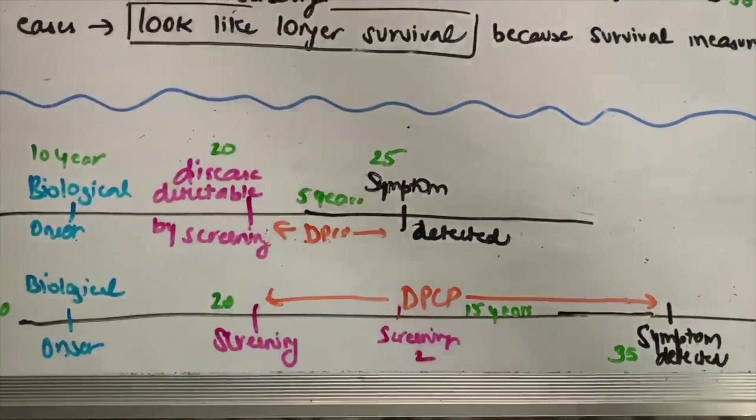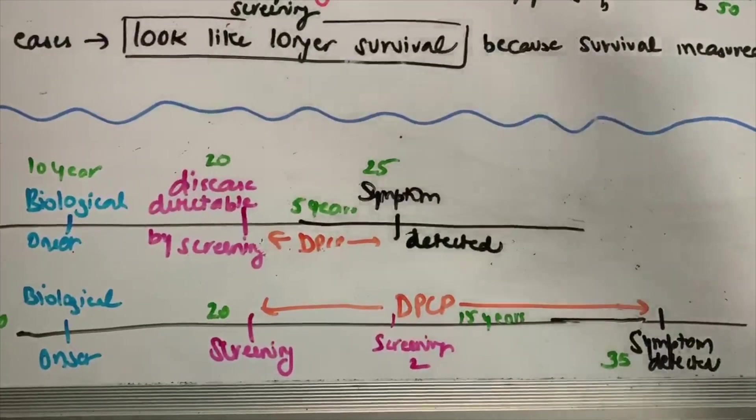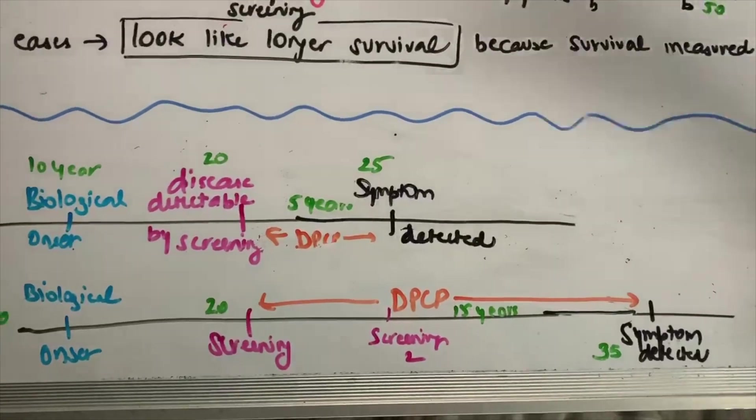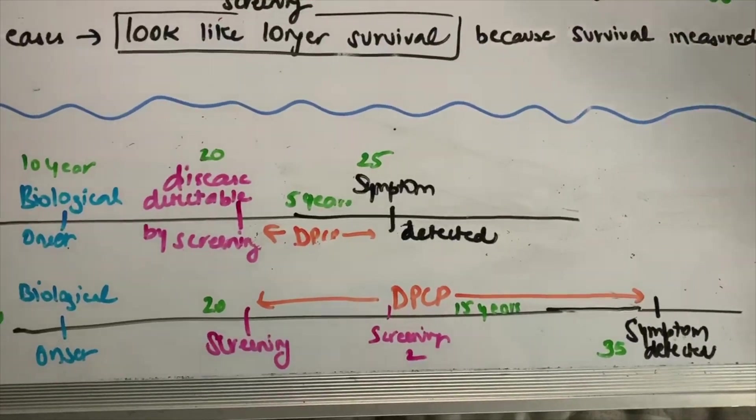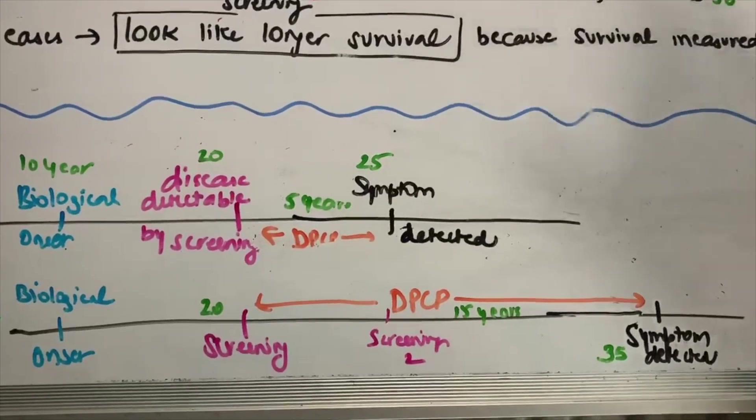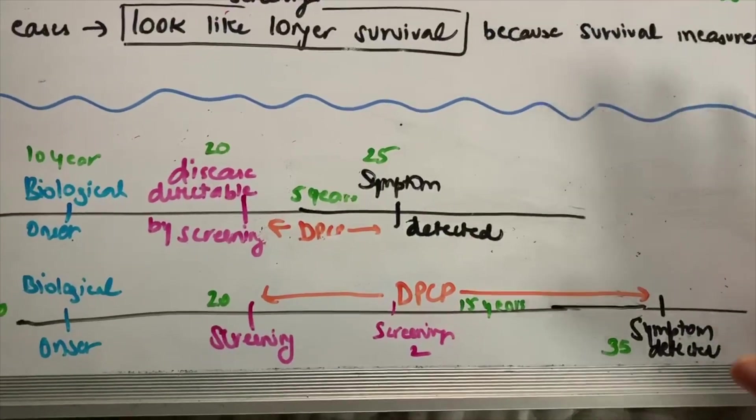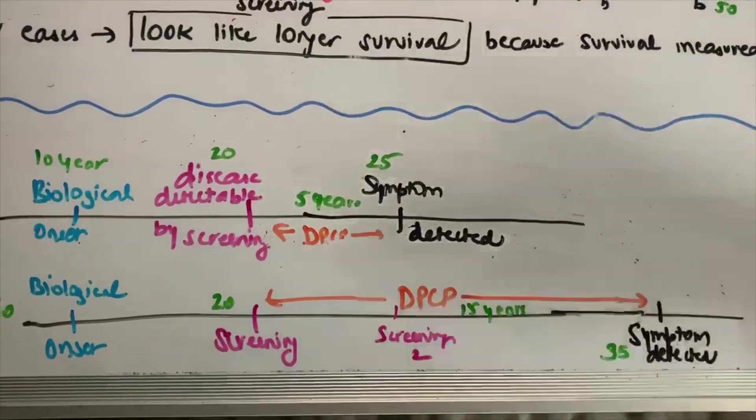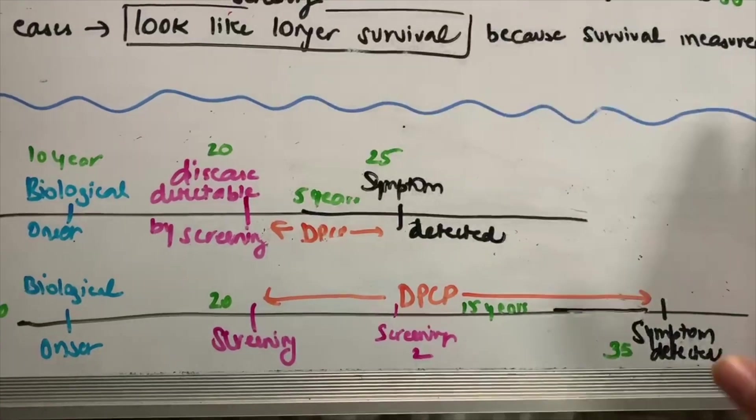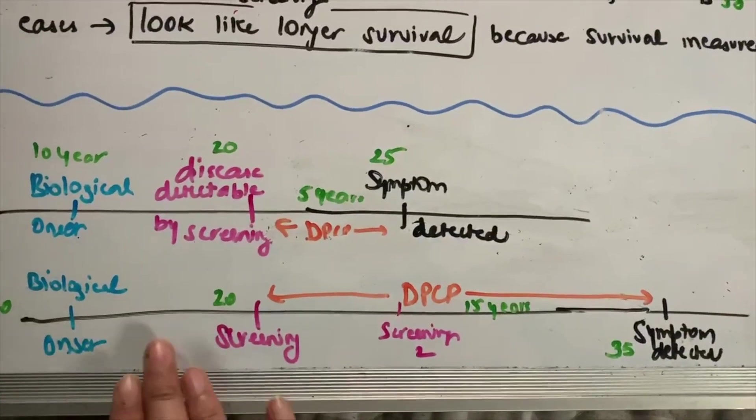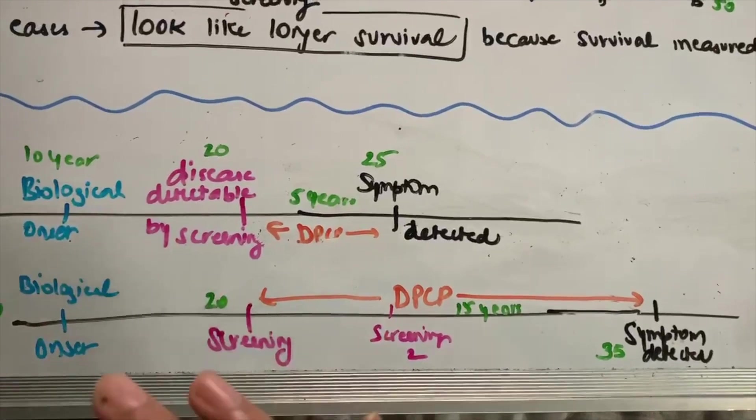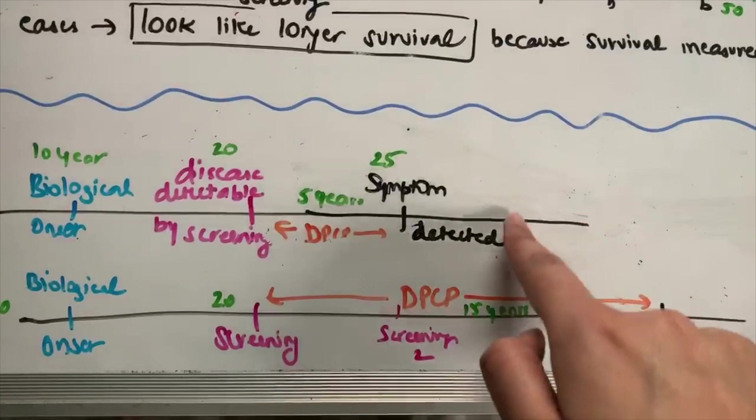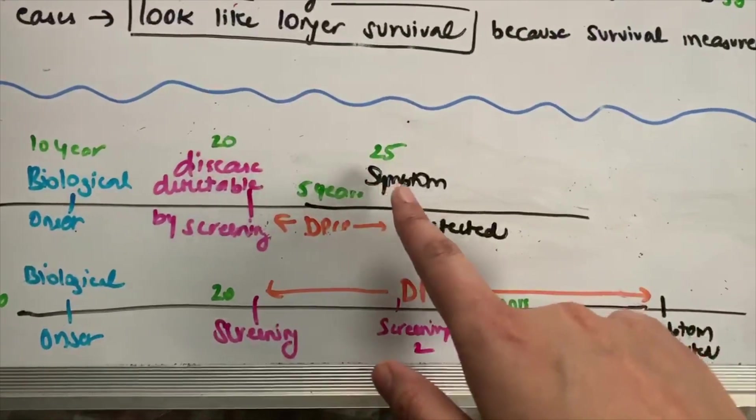So length time bias basically happens when a screening test makes it look like there's an overestimation of the survival time, or survival duration, because most of the cases that are screened and diagnosed through screening have naturally benign prognosis—benign cases with good prognosis. So regardless of whether these cases get screened or not, they have a really benign course and they have a good prognosis.